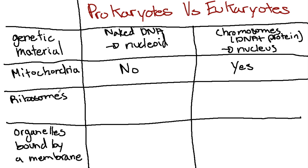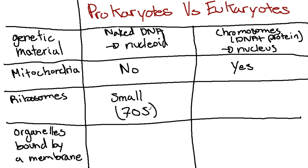Ribosomes: ribosome size varies between prokaryotes and eukaryotes. In prokaryotes, we see relatively small ribosomes — they are 70S. Eukaryotes have relatively large ribosomes — they are 80S.